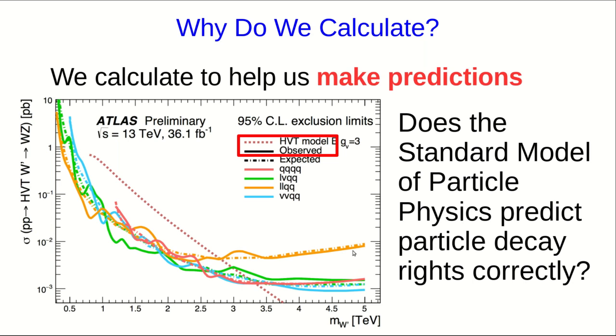But again, the reason scientists usually calculate is to test hypotheses. We predict by calculation what the result of an experiment will be, then we do the experiment and see if our prediction was correct.